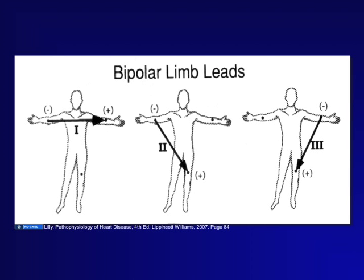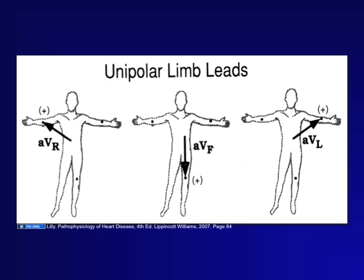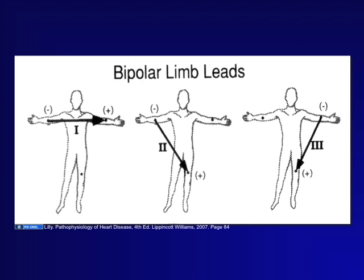We can also use two leads to create an orientation — bipolar leads. Lead 1: negative electrode on the right arm, positive on the left arm. Lead 2: negative on the right arm, positive on the left leg. Lead 3: left arm is the negative electrode, positive electrode on the leg. These are the six limb leads — unipolar AVR, AVF, and AVL, plus bipolar leads 1, 2, and 3 — all looking at the EKG in a single frontal plane. 'Bipolar' is not a psychiatric diagnosis — it's an orientation of the EKG.